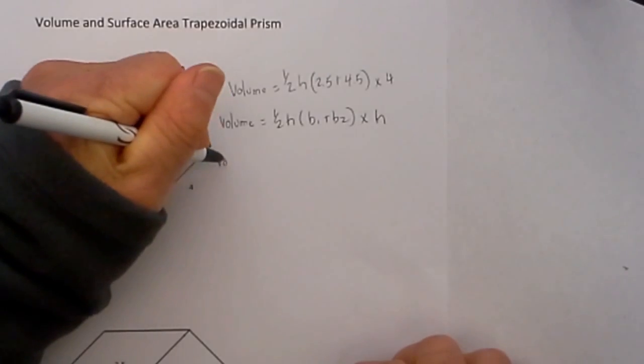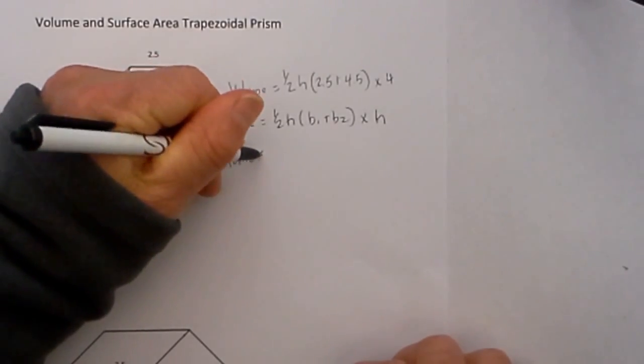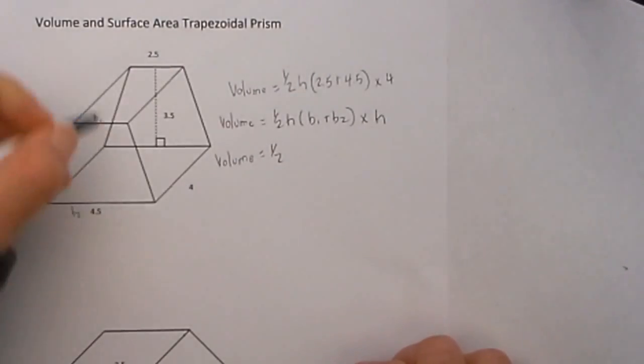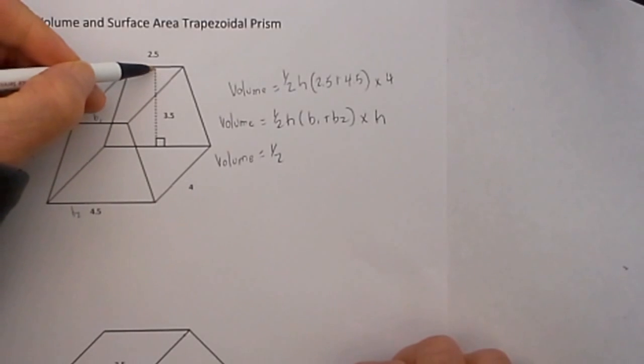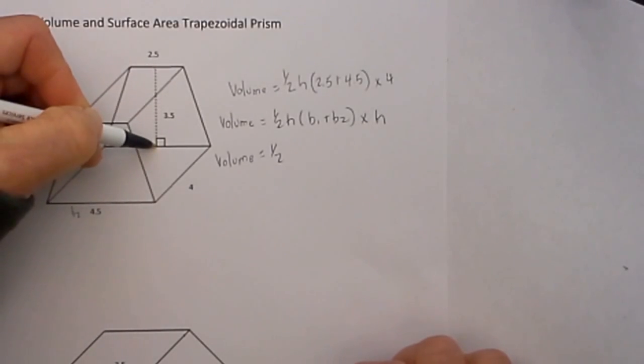So when we start plugging in numbers, the volume will equal 1/2 the height of the trapezoid, and it is given a line that is perpendicular to the bases. You can see we have a 90-degree angle there and that is 3.5.